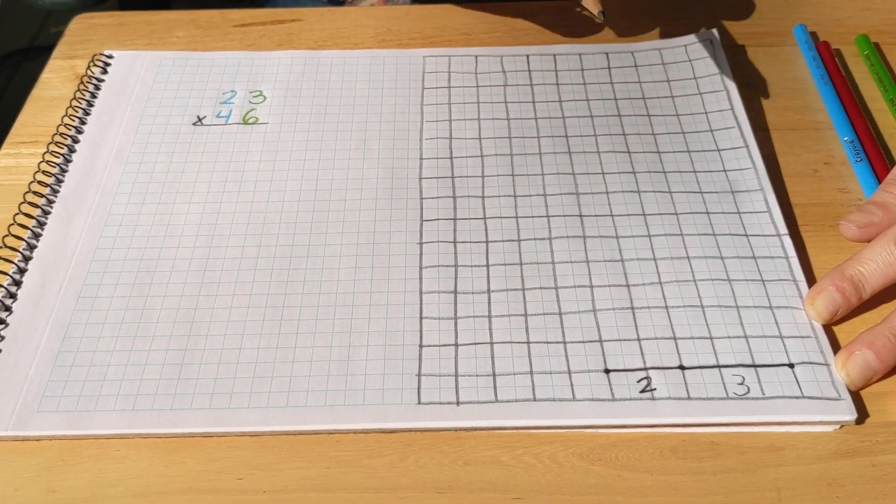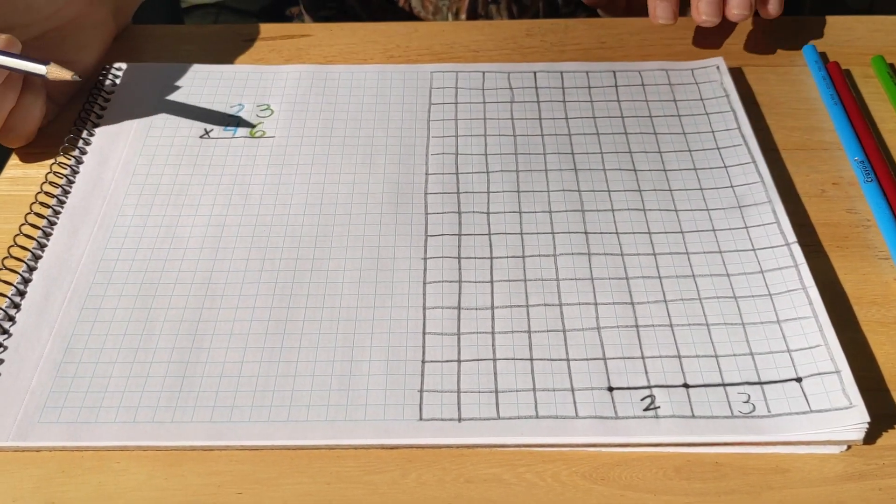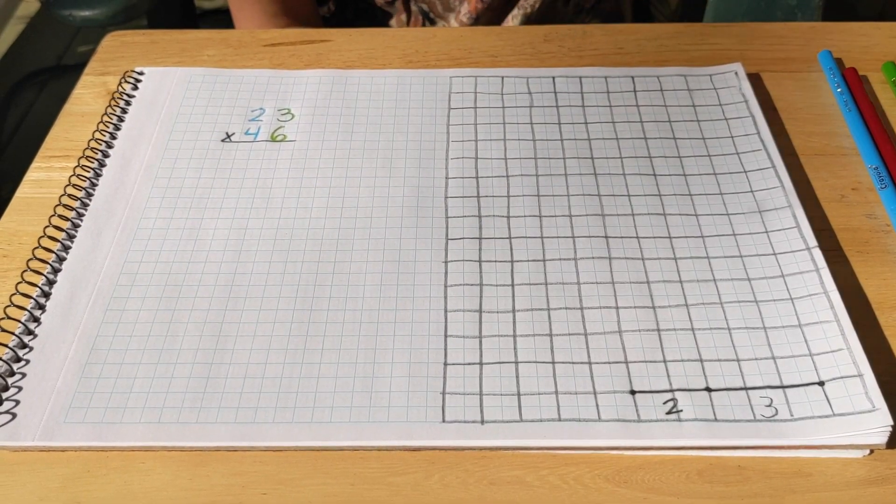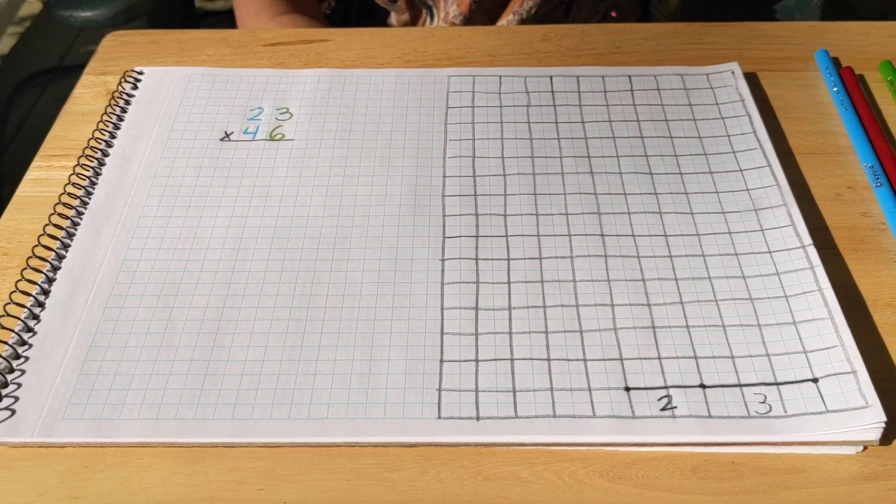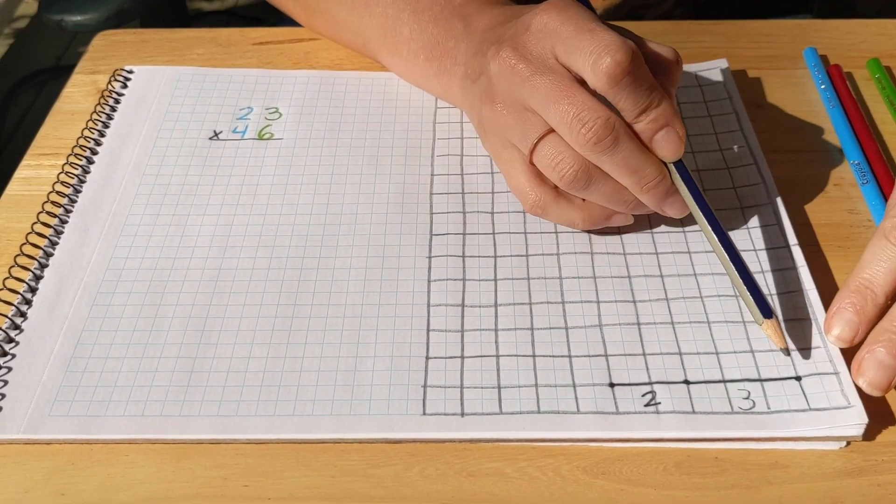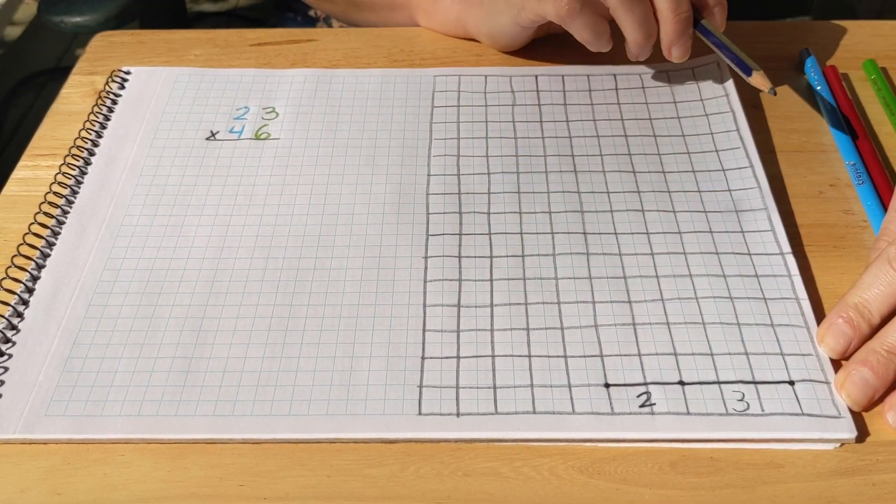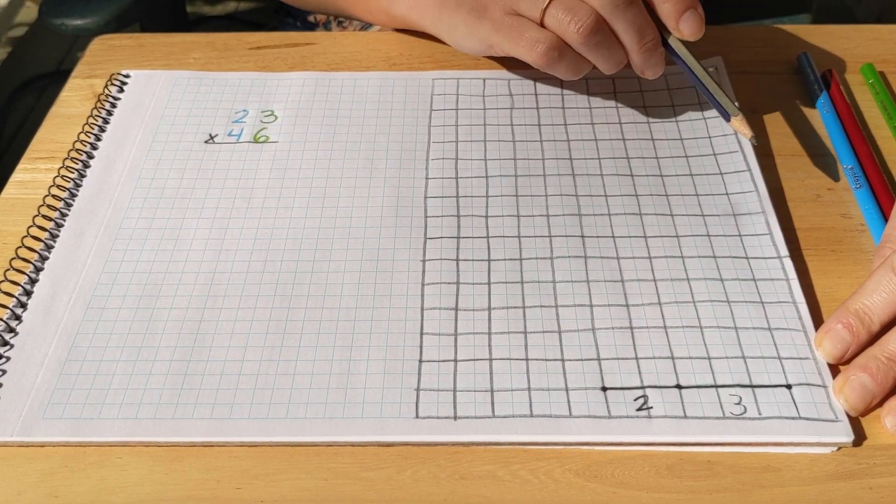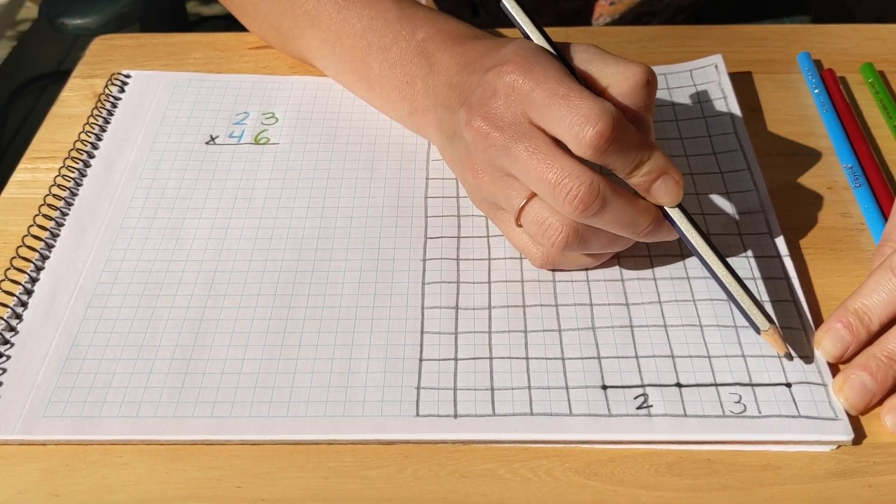Is that three backwards? No. So now we're going to count out our 46. And just like on the checkerboard, that number goes up along the side here. So starting from our original point, we're going to count out our units. In 46, we have six units, right?